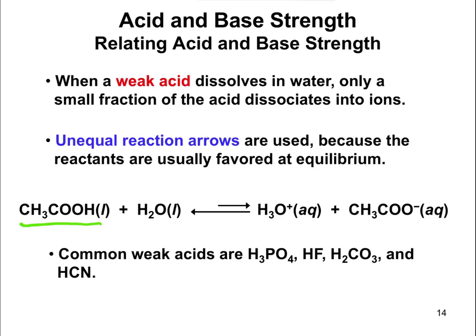For weak acids, the two you'll see most are acetic acid, CH3COOH — go ahead and learn that name now because you'll see it in the organic chapter; it's a structure you'll need to know. The other one you should know is H2CO3, carbonic acid. This will be important when we talk later in this chapter about buffers, and it's important physiologically. H3PO4 is also important physiologically, but we won't focus on it as much as H2CO3.